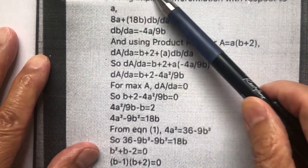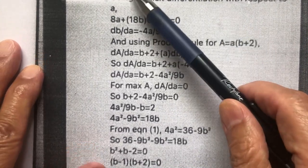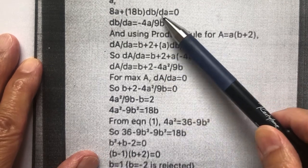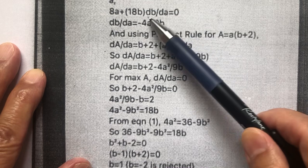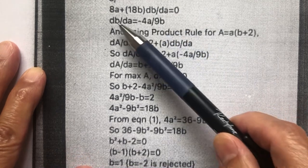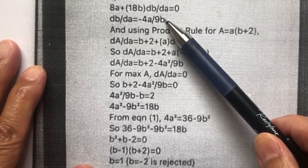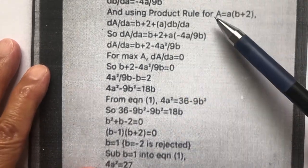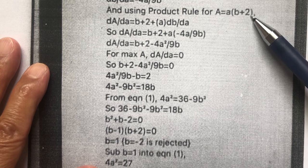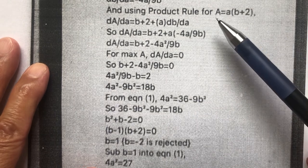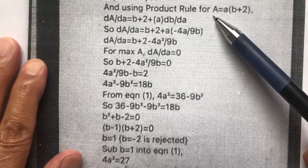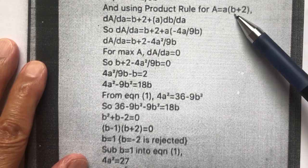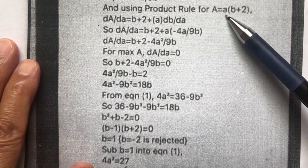Do the derivative of equation 1 with respect to a, and then I get this. Isolate db/da. I get this. Go to the area. Area is this. Do the derivative of area with respect to the variable a. Remember, b is a function of a, so a is the variable.